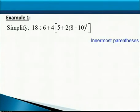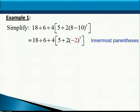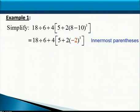The operation inside those parentheses is subtraction. So the first thing we need to do is subtract 8 minus 10, which is negative 2. Notice that everything else stays the same — performing one operation at a time is a really good way to write down your steps so that you don't get lost and you don't make mistakes.